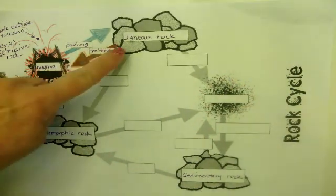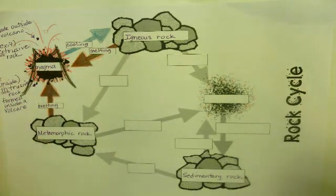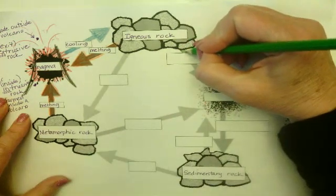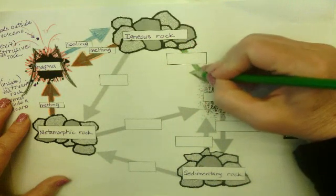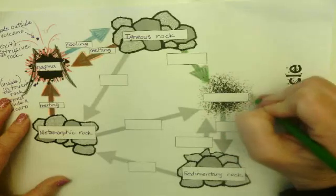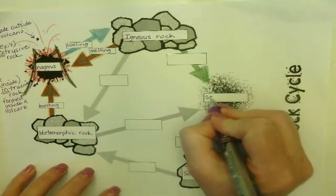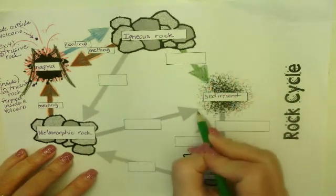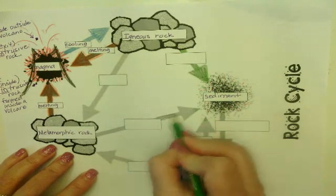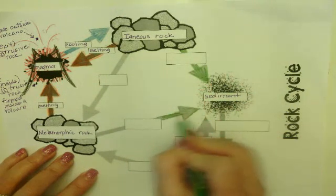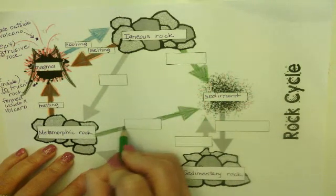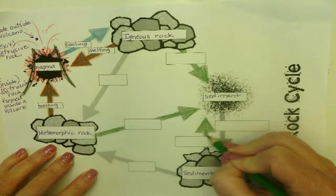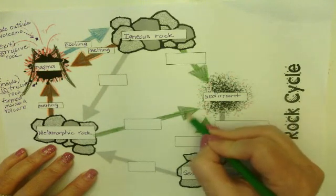If you're an igneous rock and something chips pieces off — like weathering — those pieces move through erosion and deposition. Every arrow that points to the sediment dots represents weathering, erosion, and deposition. Every single rock can be broken down: igneous, sedimentary, or metamorphic can all become sediment, and even sediment can break down into more sediment.